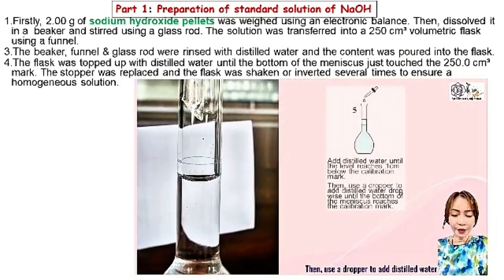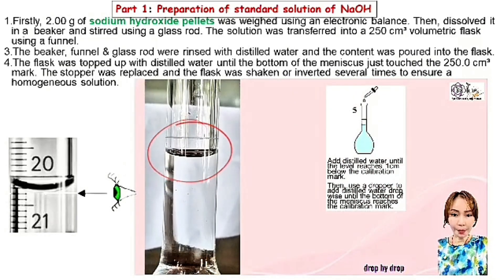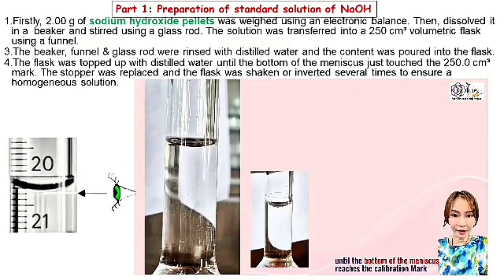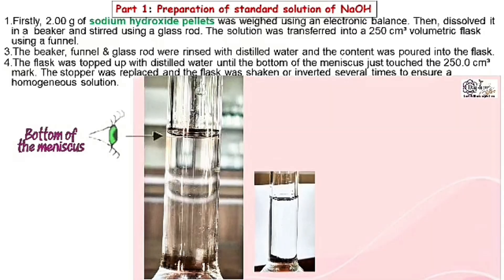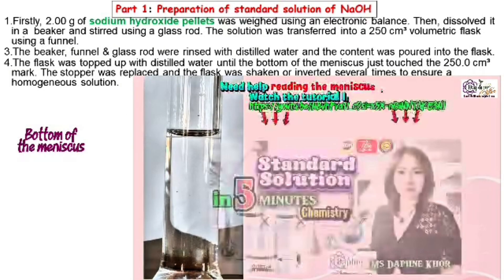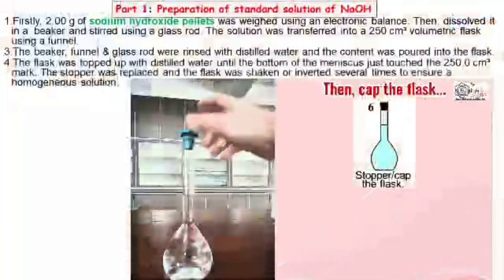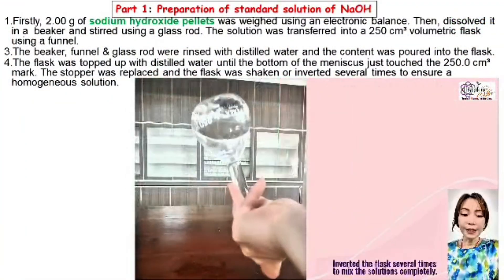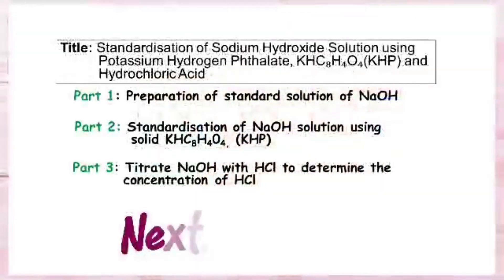Then use a dropper to add distilled water drop by drop until the bottom of the meniscus reaches the calibration mark. Invert the flask several times to make the solution completely uniform.